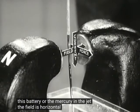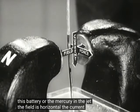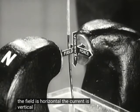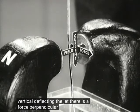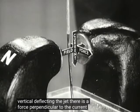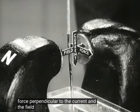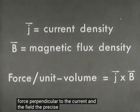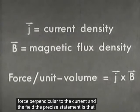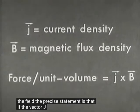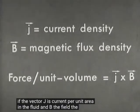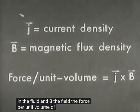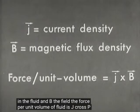The field is horizontal, the current is vertical. Deflecting the jet, there is a force perpendicular to the current and the field. The precise statement is that if the vector J is current per unit area in the fluid, and B the field, the force per unit volume of fluid is J cross B.